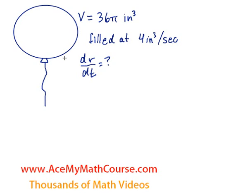Okay, so we have decided to fill up the spherical balloon with helium at a rate of 4 cubic inches per second. Now the question is, at what rate is the radius increasing, the radius of the balloon of course, when the volume of the balloon is 36π cubic inches?